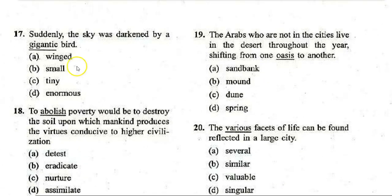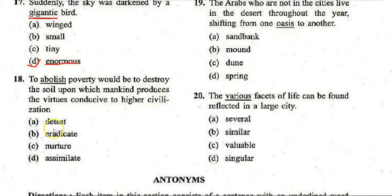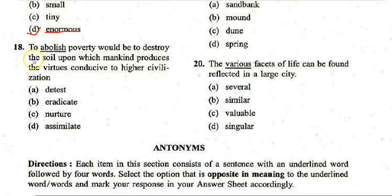Next: 'Suddenly the sky was darkened by a gigantic bird.' Options: A. Winked, B. Small, C. Tiny, D. Enormous. The correct answer is D — 'enormous.' 'Gigantic' and 'enormous' mean the same thing.